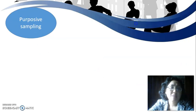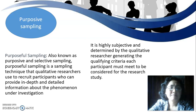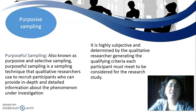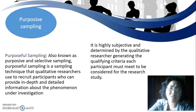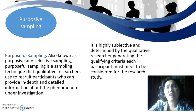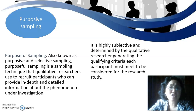The first type is purposive sampling, also known as purposive and selective sampling. This technique is used by qualitative researchers to recruit participants who can provide in-depth and detailed information about the phenomena under investigation. It is highly subjective and determined by the researcher generating qualifying criteria each participant must meet to be considered for the study — meaning the researcher decides the criteria for who is selected as the sample.